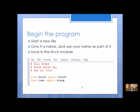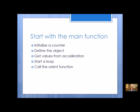To begin the program, you're going to be in Python 2.7. Start a new file and give it a name — use your name as part of it, so something like Finch Which Way and your name. Save the Finch module in your student account to get that set up and out of the way. I would encourage you to put your comment block at the top and import at least these two modules.